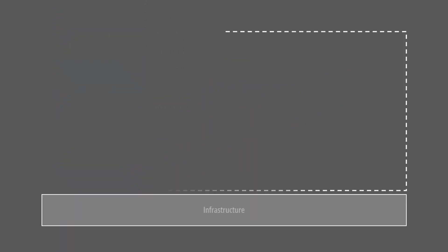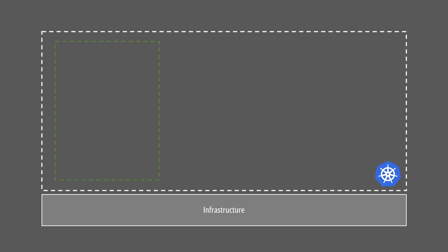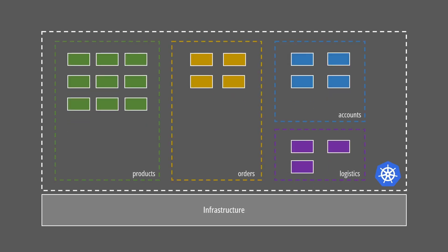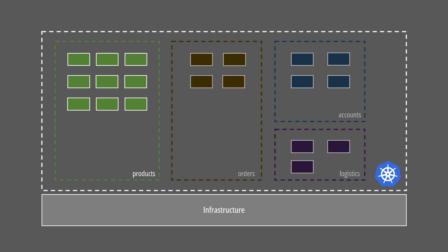By deploying services independently, we can optimize the utilization of physical or virtual resources. We can deploy a larger number of replicas of those services that need to handle a lot of requests or computational load.